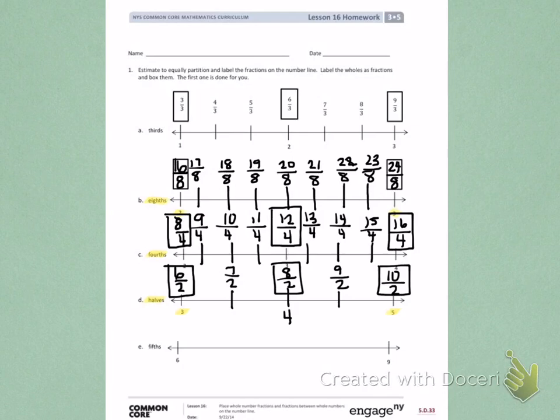On letter E, you have a number line with 6 and 9. You need to make sure that you label the numbers between 6 and 9 first. Then partition each portion of your number line into fifths. Label the fractions for each portion, and put boxes around the whole number fractions.